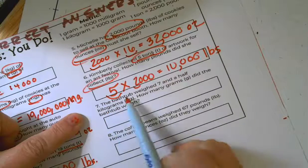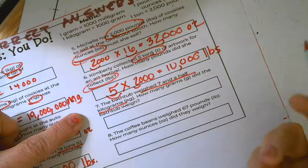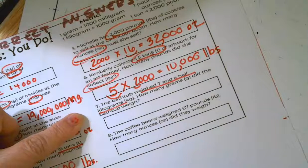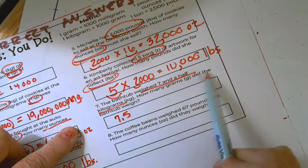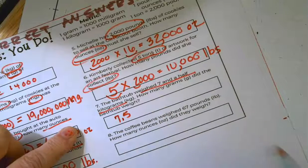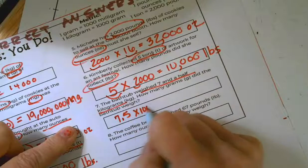Well, number seven, the bathtub weighed 7 and a half kilograms. I know in the metric system, instead of writing that as a fraction, I'm going to write that as 7.5. How many grams did the bathtub weigh? Well, I know there are 1,000 grams in the kilograms. So I'm going to multiply it by 1,000.